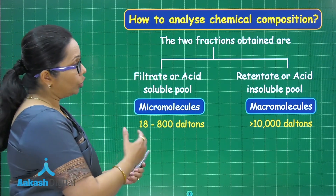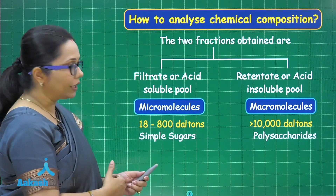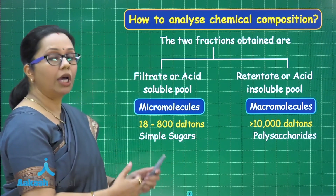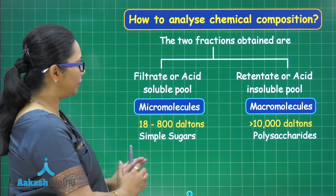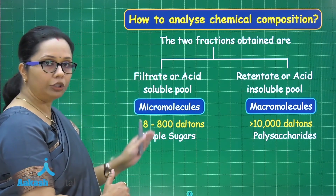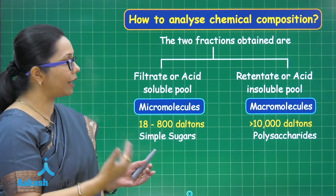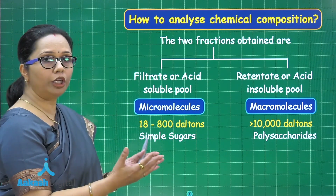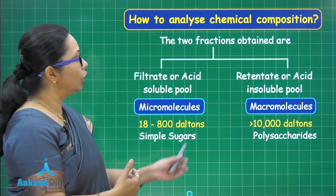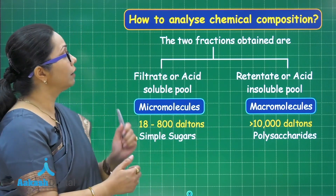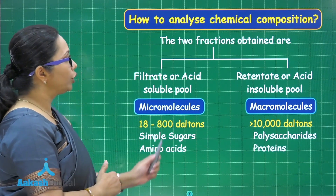Among carbohydrates, the simpler sugars — monosaccharides and oligosaccharides — will be found in the filtrate. The polysaccharides, where 'poly' means many and 'saccharides' means sugar, involve several sugar molecules combining together to form macromolecules like cellulose and glycogen. These will be in the acid insoluble pool.